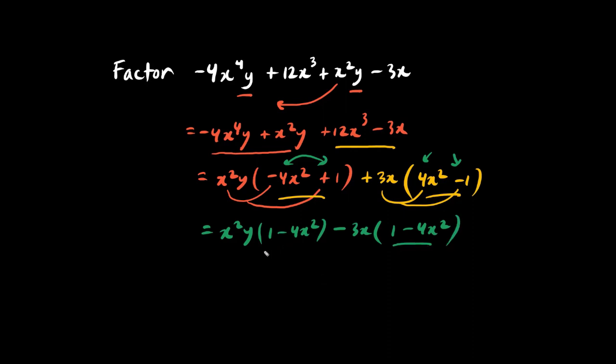Let's factor out this twin, 1 minus 4x squared. That's the GCF of the two terms above. We copy in these values: x squared y minus 3x. Now don't stop here.